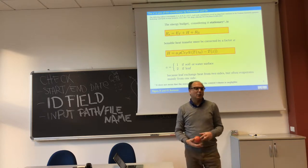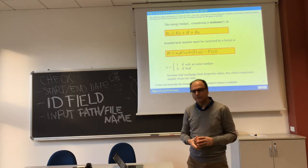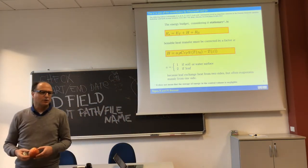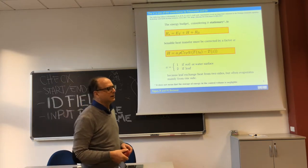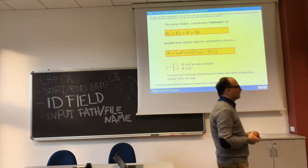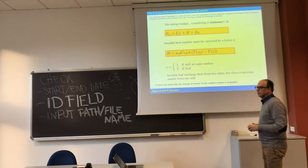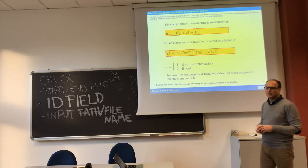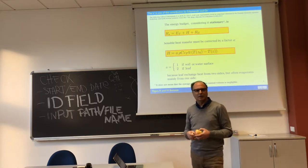We have other equations where evapotranspiration or evaporation is included. The first one is the energy budget. The energy budget here is considered as a stationary thing, meaning that we have RS — you can think of it as the solar direct radiation. We talked about radiation yesterday. But you can also put RN, which is the net radiation, in this case, and nothing changes. It depends on the type of problem you are facing and what component of radiation is important for you.